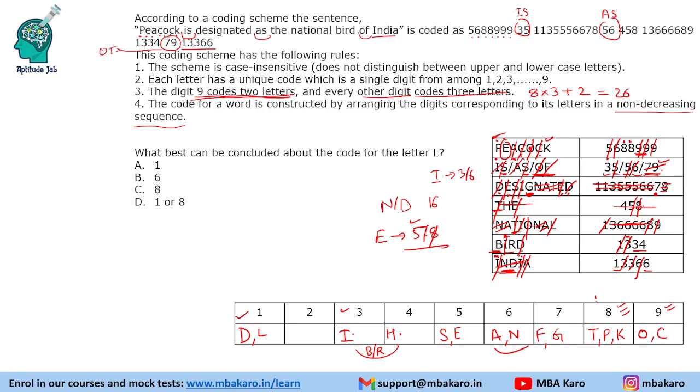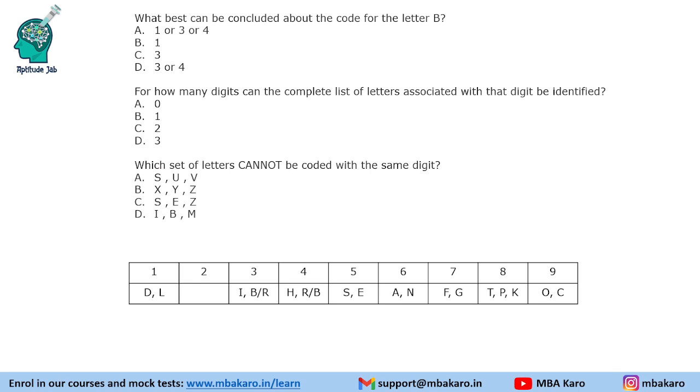What best can be concluded about the code for the letter L? So L is coded as 1. What best can be concluded about the code for the letter B? So B is either 3 or 4. How many digits can the complete list of letters associated with that digit be identified? So we can find both the codes for 9 and both all the 3 codes for 8. For rest of them we cannot determine. So for only 2 digits we can determine the codes.